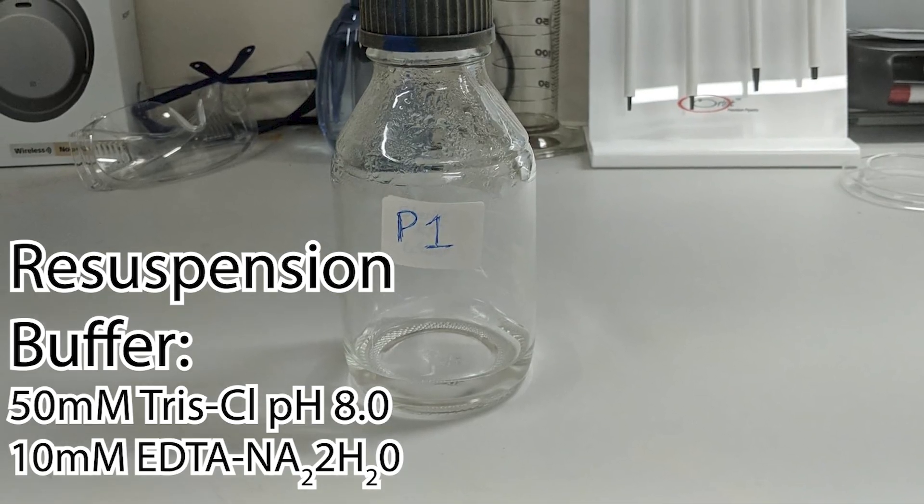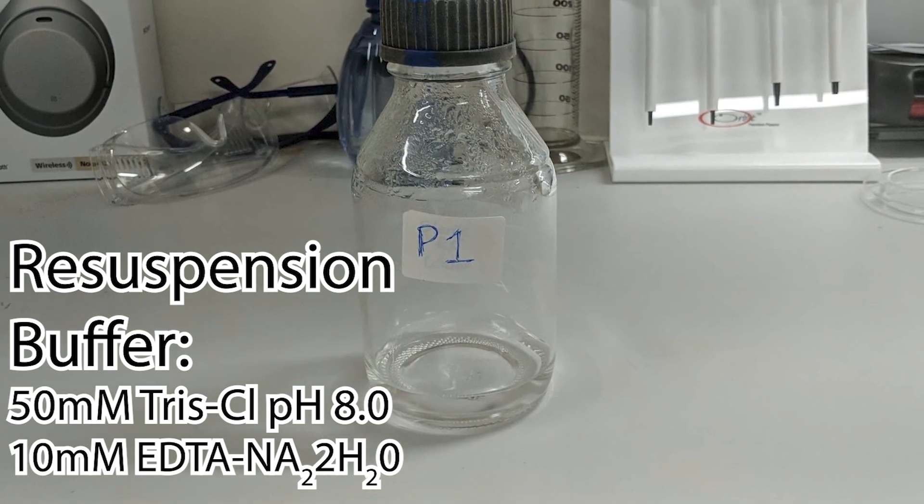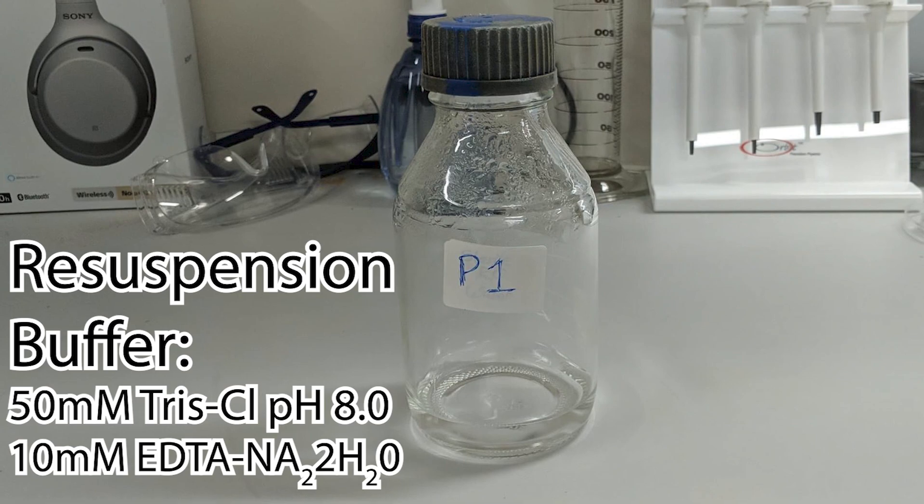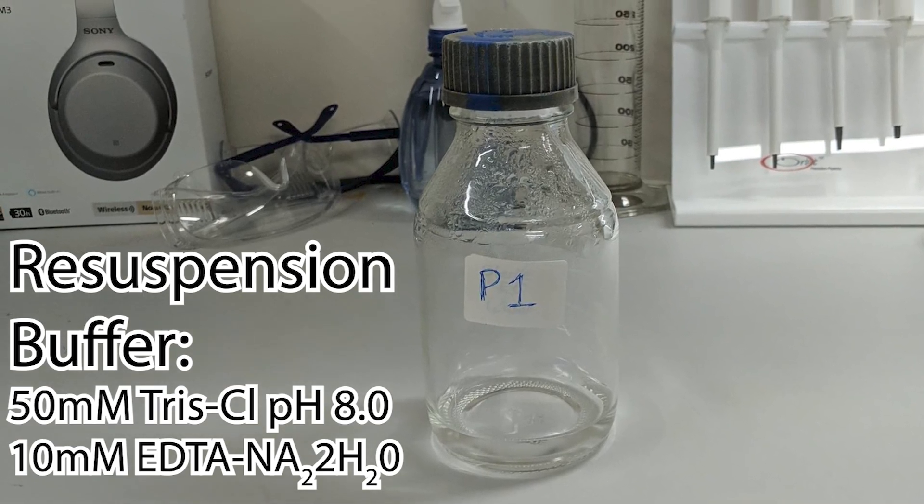The first buffer used during a mini prep is the resuspension buffer also known as P1 or buffer A depending upon the brand of kit you might order if you didn't have an awesome resource like ours to help you save money.